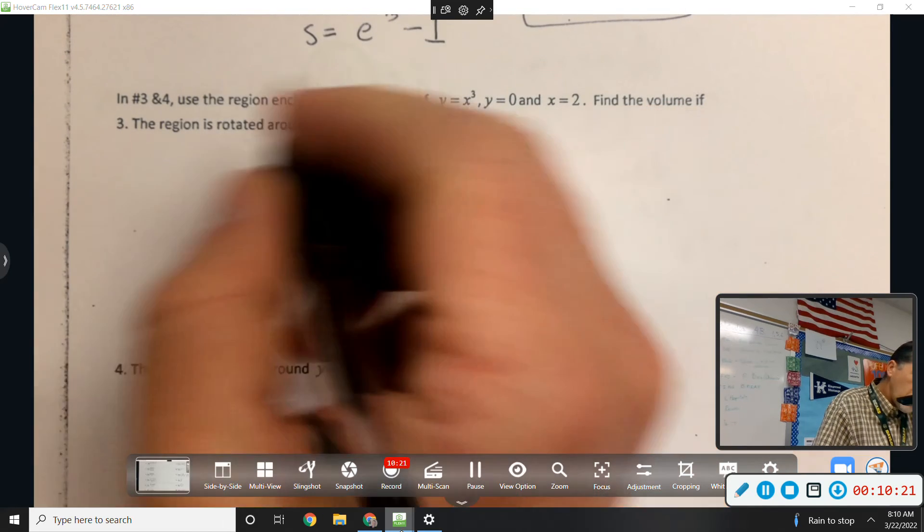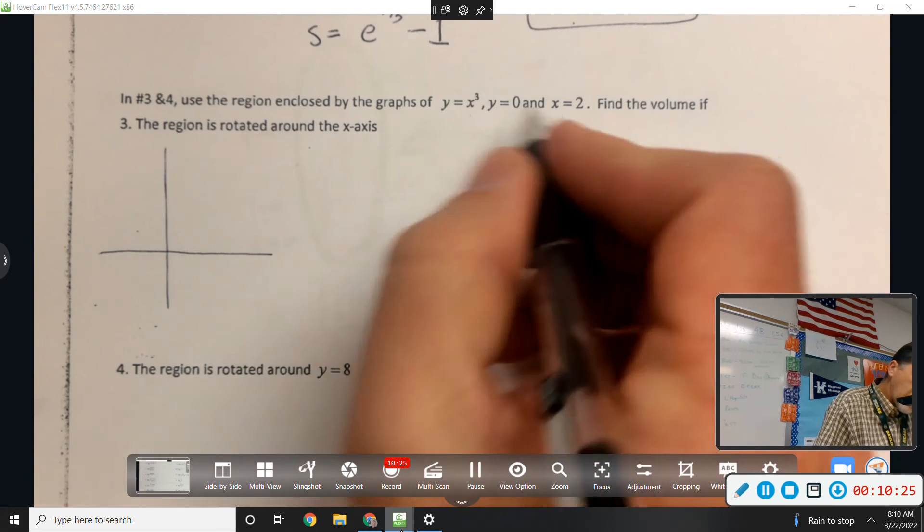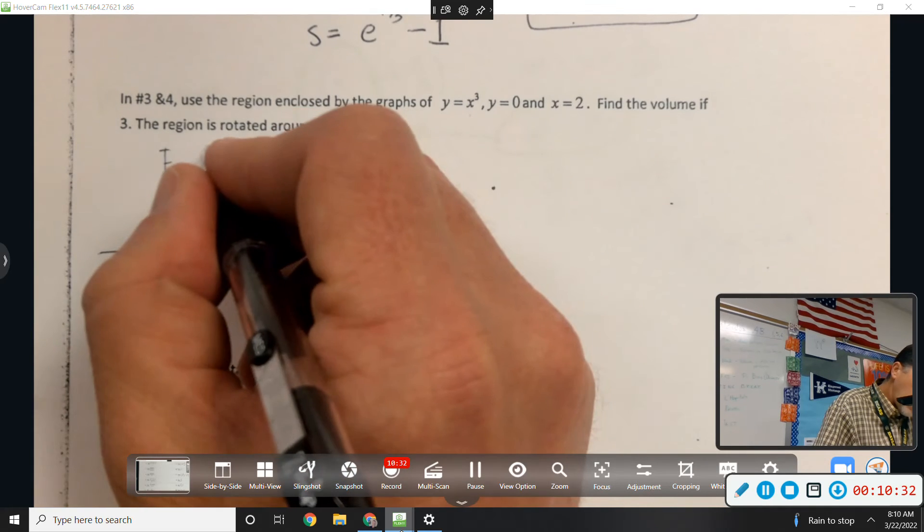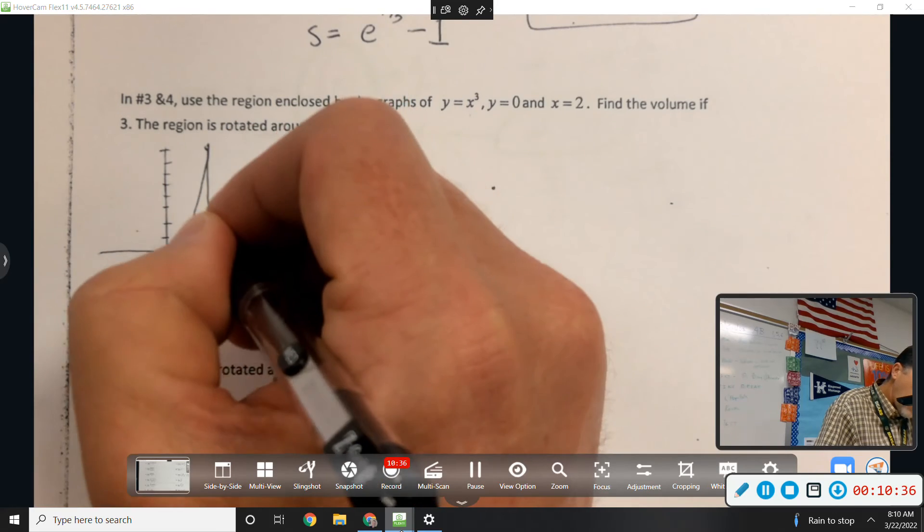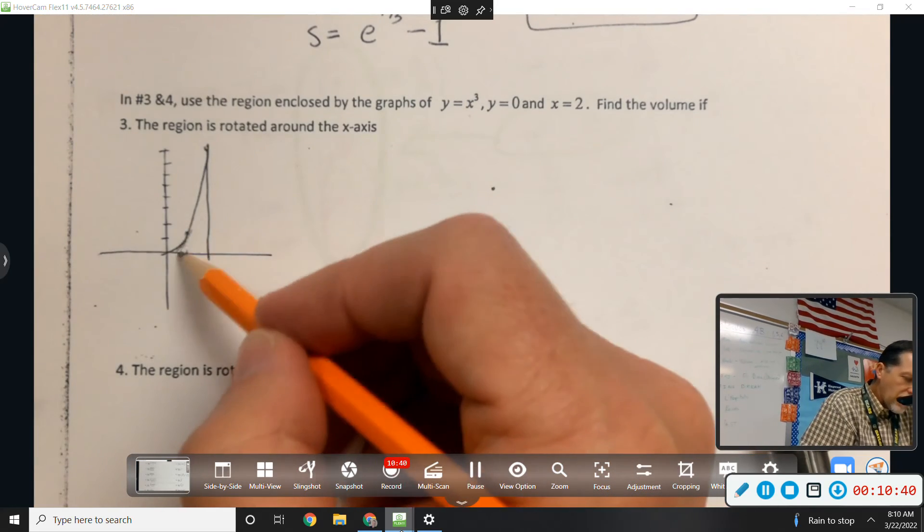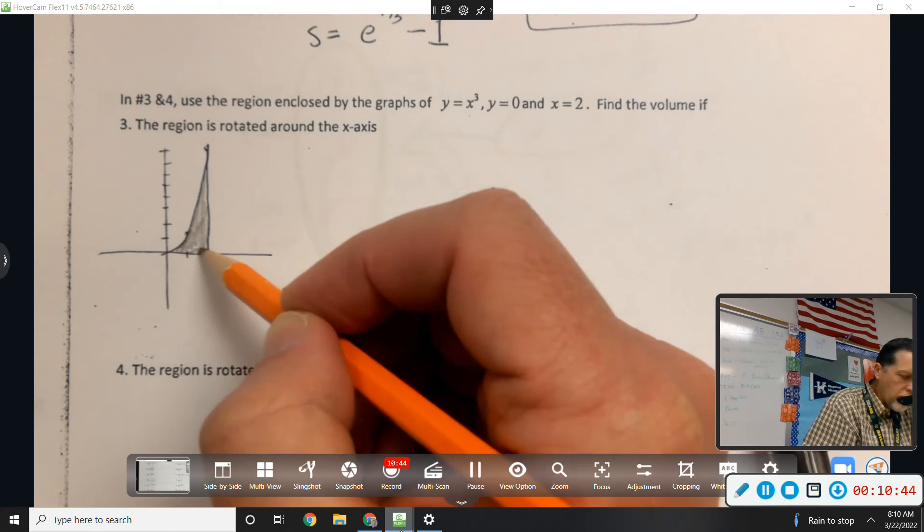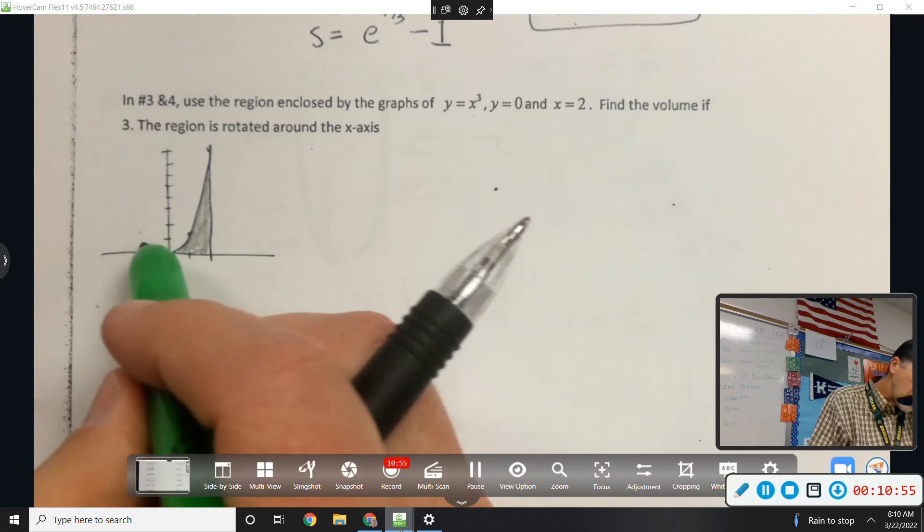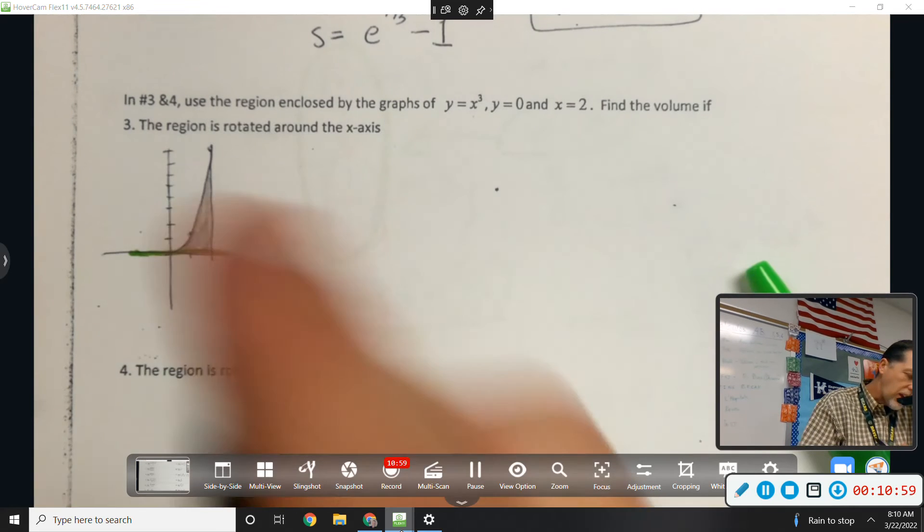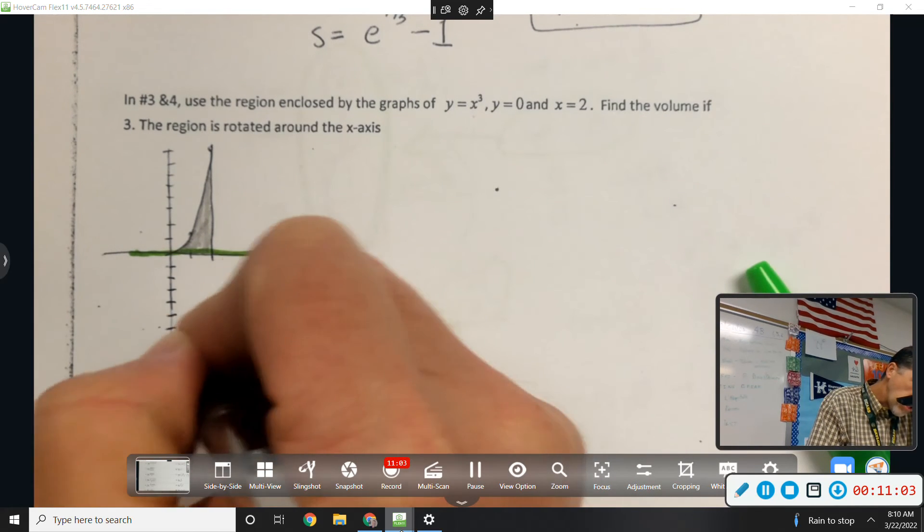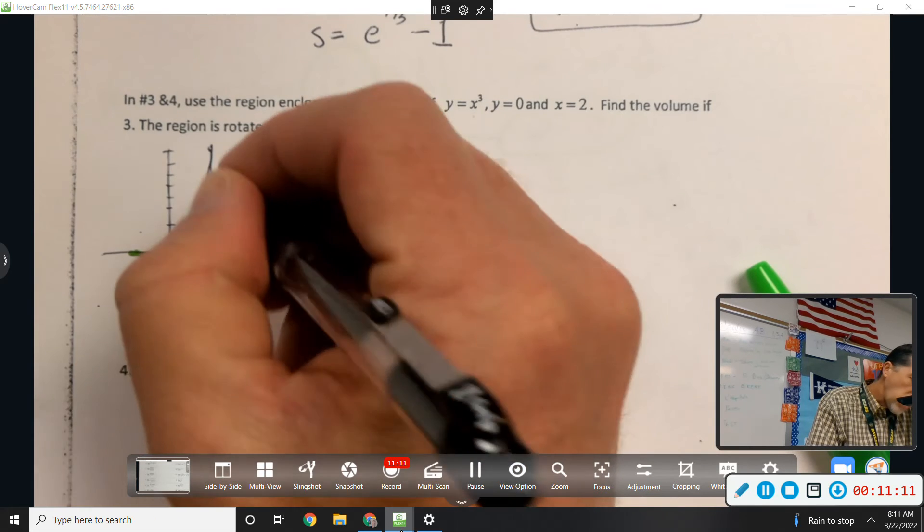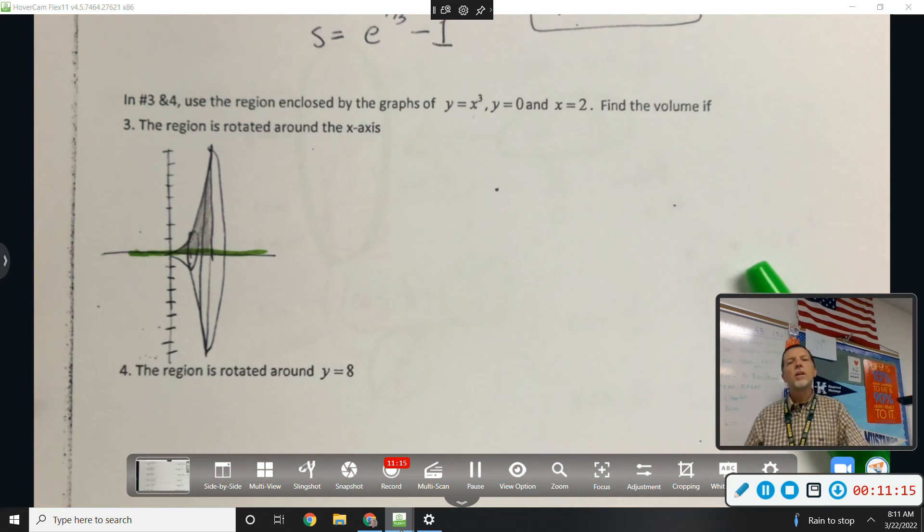Use the region enclosed by y equals x cubed, y equals 0, and x equals 2. Okay. So if x equals 2, then we're heading up to 8 for a cube graph. So there's my base area. And again, you've got a calculator, so if you forgot what x cubed looks like, you can type that in the calculator and see. Find the volume if the region is rotated around the x-axis. Reflect it across. Draw some circles.